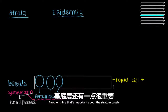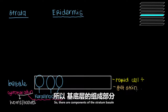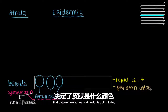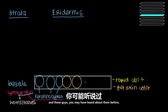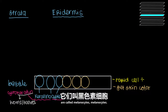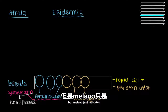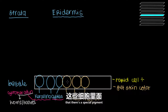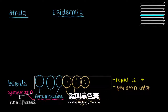Another important thing about the stratum basale is this is where we get our skin color from. The cells that confer skin color sit here as well, and these are called melanocytes. 'Melano' indicates a special pigment made in these cells that helps determine our skin color, and that pigment is called melanin.